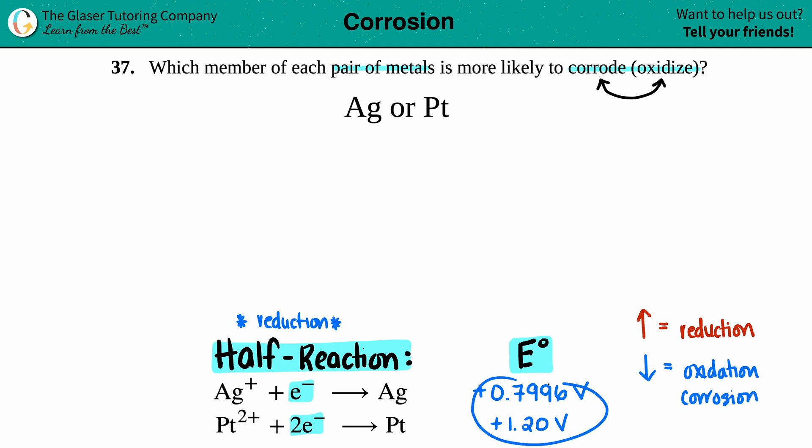So I just have to compare these E° values. Which one is the lower number? 0.7996 is lower than 1.20. So out of these two substances, silver is going to corrode first before platinum. And that is the answer.